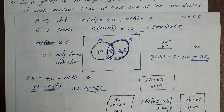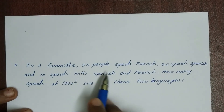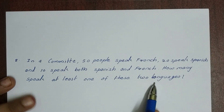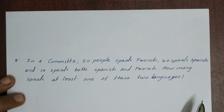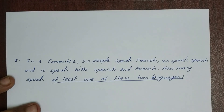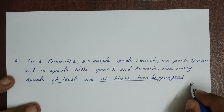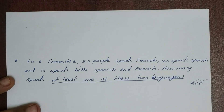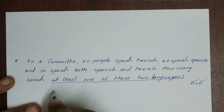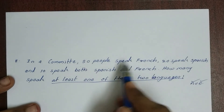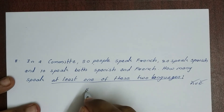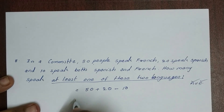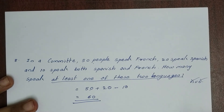Last problem: 50 people speak French, 20 people speak Spanish, and 10 speak both Spanish and French. How many speak at least one of these two languages? Let A be French and B be Spanish. The number of elements in A union B equals 50 plus 20 minus 10, which equals 60. So 60 people speak at least one of these two languages.